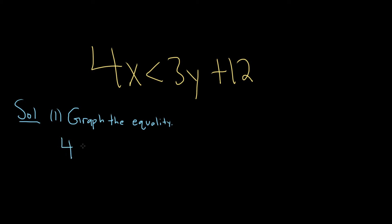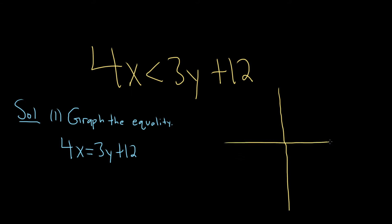So we have 4x equals 3y plus 12. The easiest way to graph this is to find the x and y intercepts. Let me go ahead and draw the y axis and the x axis.